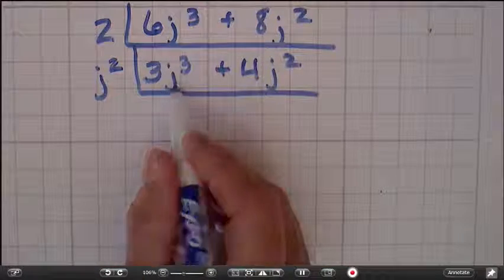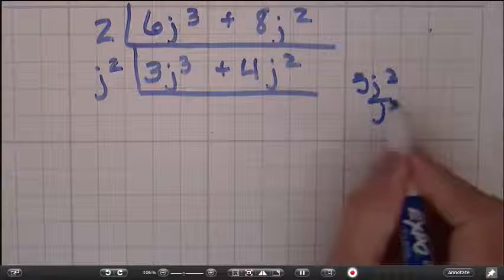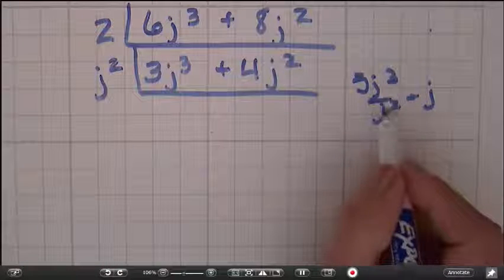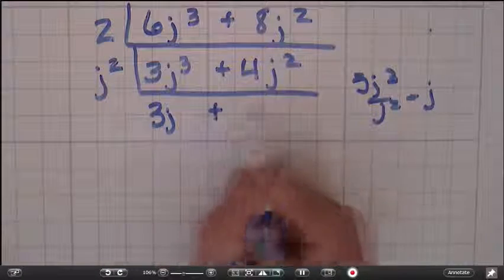So if I take 3j cubed divided by j squared, I get j. There's 3 on the top, 2 on the bottom. If you cancel out, you'll end up with 1j.